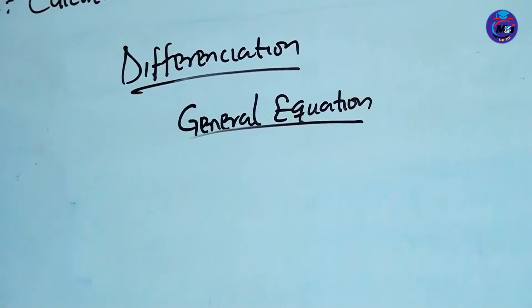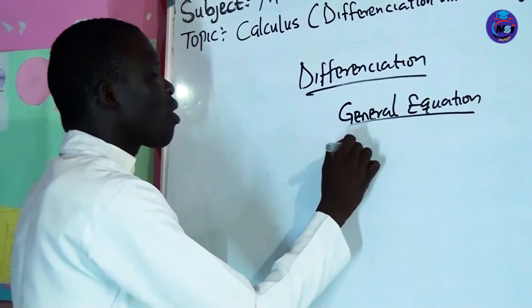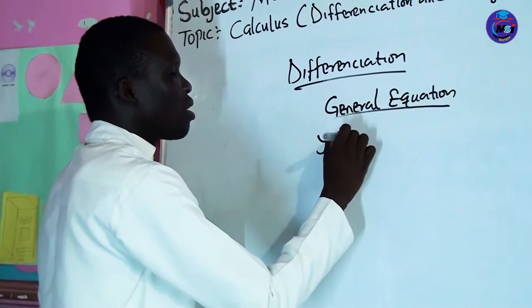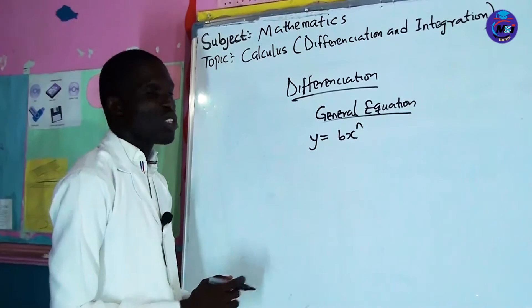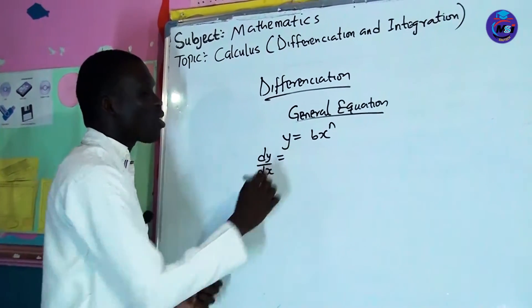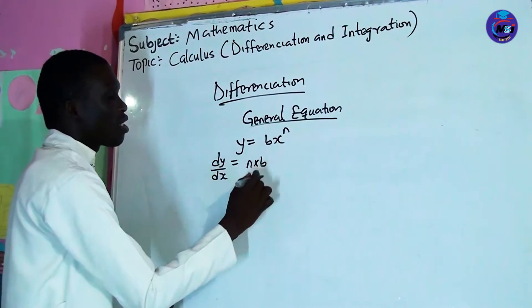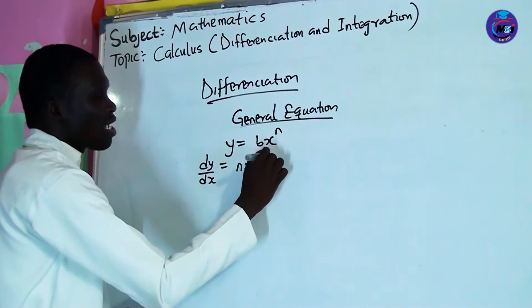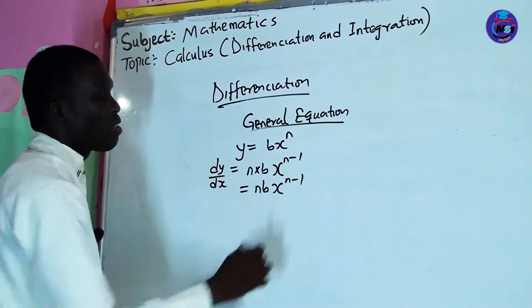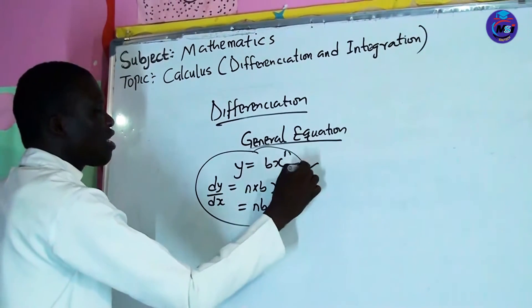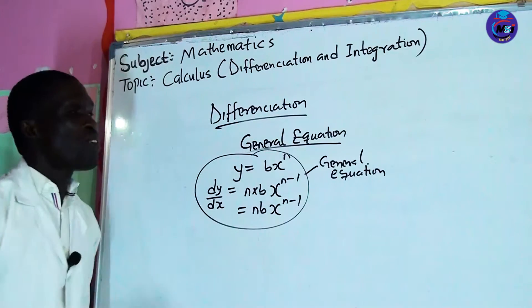Let's start with the general equation. This general equation tells us that if y equals bx raised to power n, then applying the general equation, dy/dx equals n times b, and the x will still remain with power n minus one. So this gives us nbx raised to power n minus one. This is what we call the general equation for finding the differential.